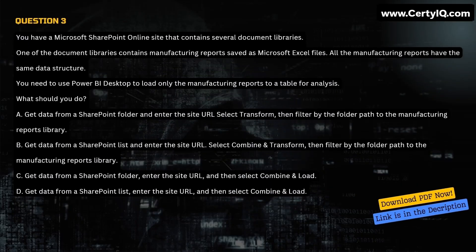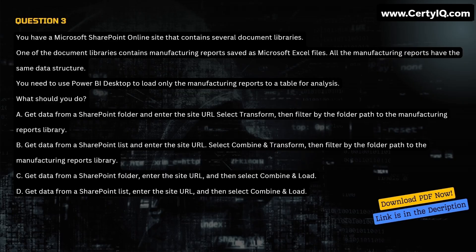Question 3. You have a Microsoft SharePoint Online site that contains several document libraries. One of the document libraries contains manufacturing reports saved as Microsoft Excel files. All the manufacturing reports have the same data structure. You need to use Power BI Desktop to load only the manufacturing reports to a table for analysis. What should you do? A. Get data from a SharePoint folder, enter the site URL, select Transform, then filter by the folder path to the manufacturing reports library. C. Get data from a SharePoint folder, enter the site URL, and then select Combine and Load. D. Get data from a SharePoint list, enter the site URL, and then select Combine and Load. Correct answer is A.